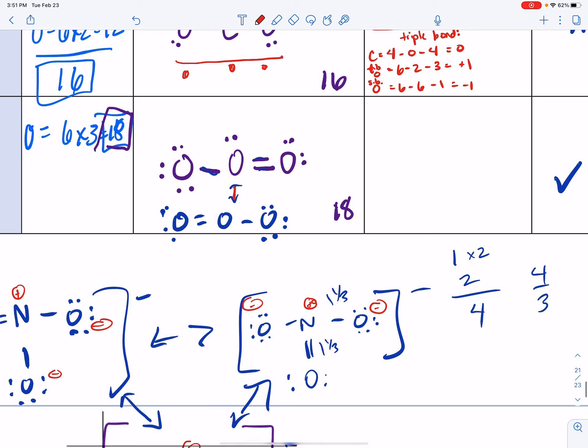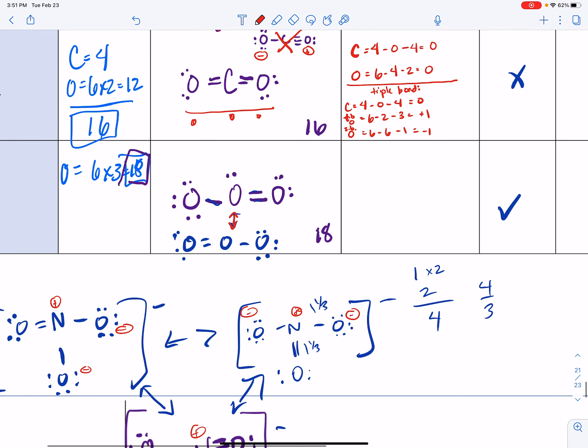Now again with resonance structures, I've already drawn the resonance structures, so there aren't other options, but we can still figure out the formal charges. So we can do this central oxygen. That one is going to be six minus and we've got two lone pairs minus three bonds, so that is plus one. So this one's going to be plus one. And then we have the double bonded oxygen and he is six minus four minus two, which gives us zero.